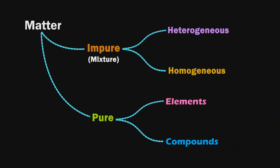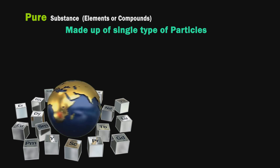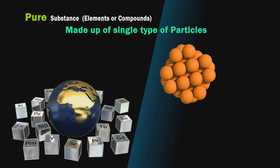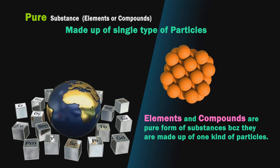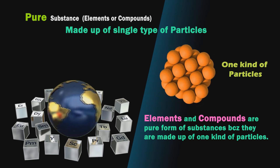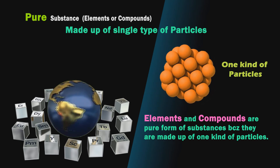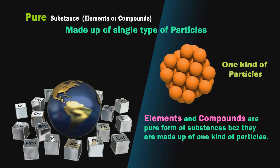Like impure substances or mixtures, pure substances are also divided into two different forms: elements and compounds. Pure form of matter is always made up of a single type of particles. Elements and compounds are two different pure forms of substances or matter. If you look closely, you can find that they are made up of one kind of particle, which may be atoms or molecules.